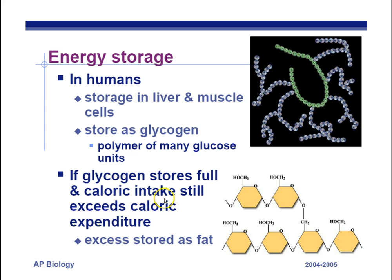If glycogen stores are full — if you've stored a lot of glycogen in your liver and muscles — then you store the extra as fat. If you're wondering how you turn sugar into fat: it's all carbons and hydrogens, you rip off a few oxygens, reassemble things with enzymes, and you've got yourself some fat, which is a triglyceride — three fatty acid tails attached to a glycerol side chain.